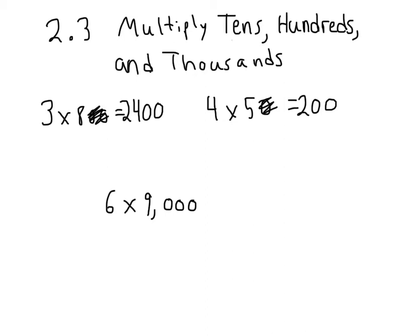Lastly, we'll try 6 times 9,000. Same thing as before, we scratch out the zeros so that they pretend they're not there. We do 6 times 9, which is 54. We put our comma, and since there were three zeros on the end of that, we need to put three zeros onto the end of our answer. So, 6 times 9,000 is 54,000.